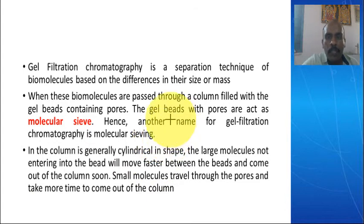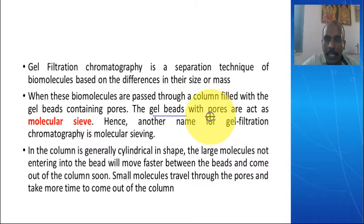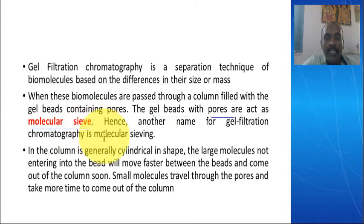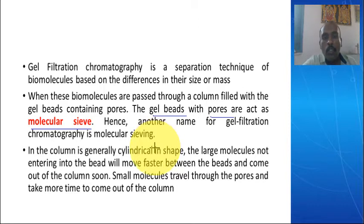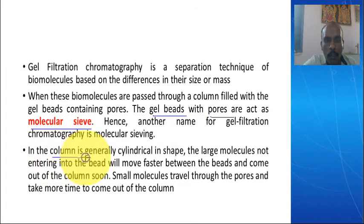The column is filled with gel beads. These gel beads contain pores and act as the molecular sieve. In this sieve, small particles easily enter while large particles cannot enter. Large particles are easily eluted from the column and it takes very small time for them to elute.